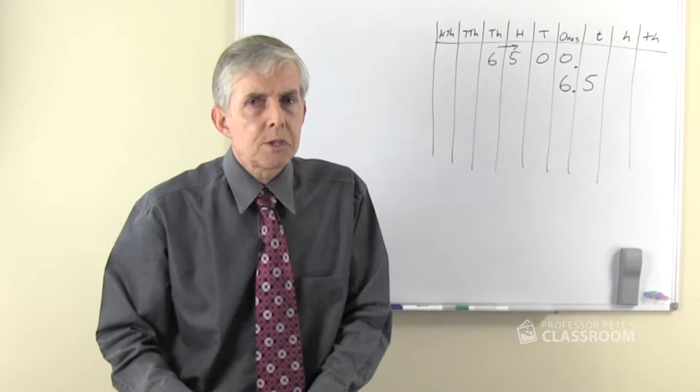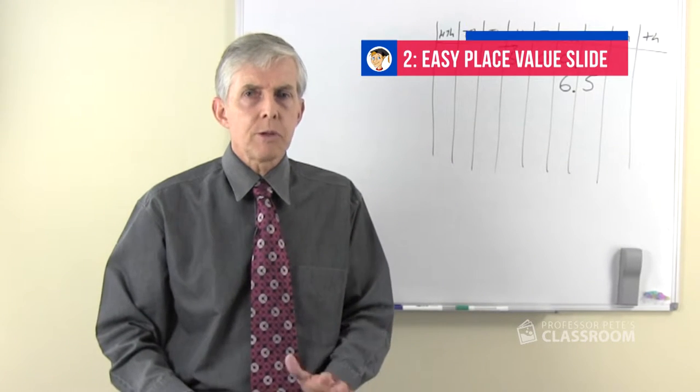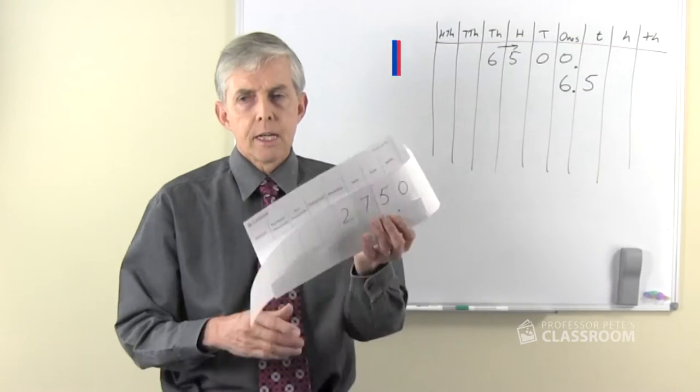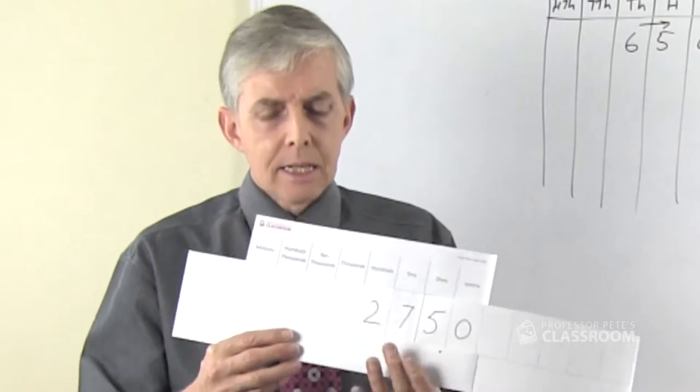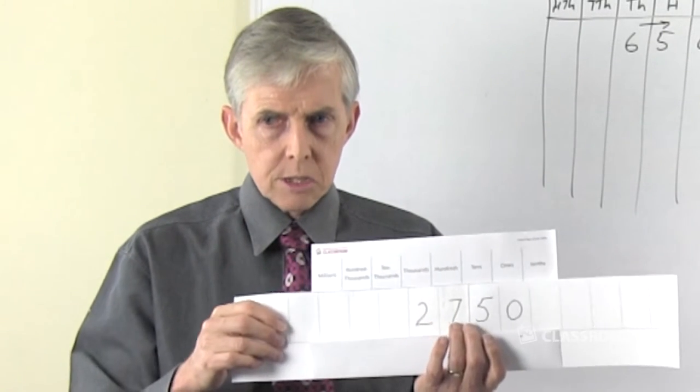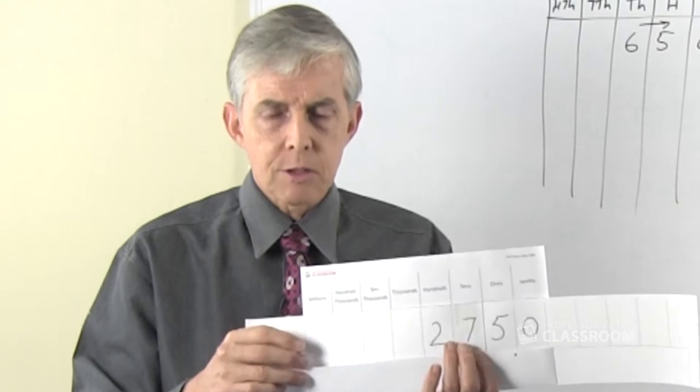So here's suggestion number two, this is a resource that we've created ourselves called an Easy Place Value Slide. It looks like this when it's complete, it's simply two pieces of paper, this one has a fold and we have digits written on it, the strip of paper and we can move it left and right.